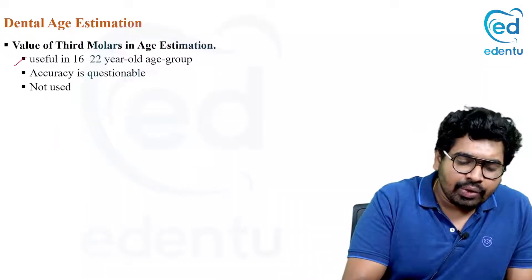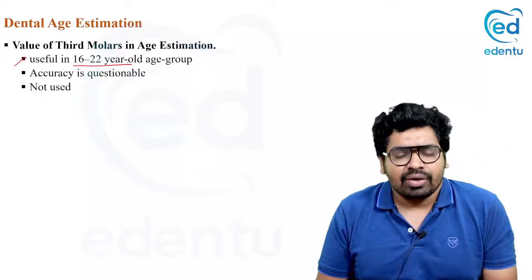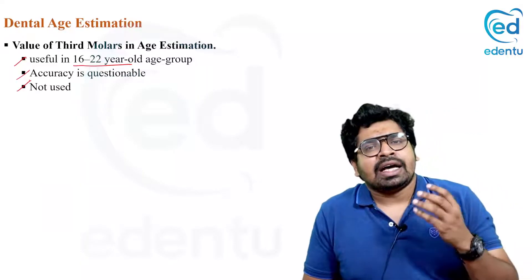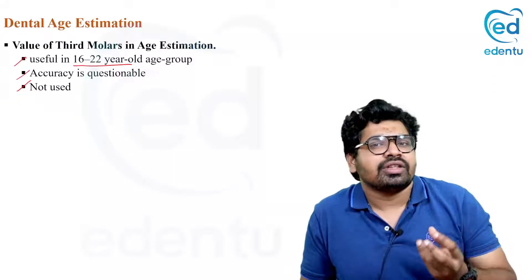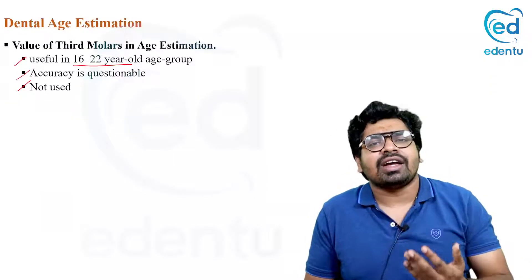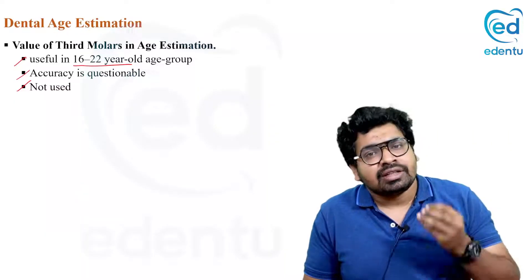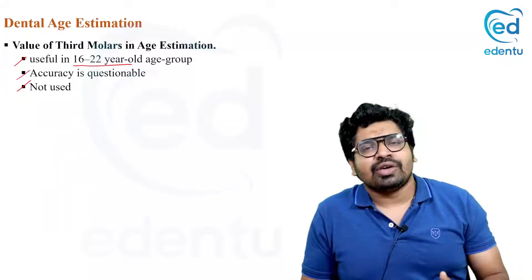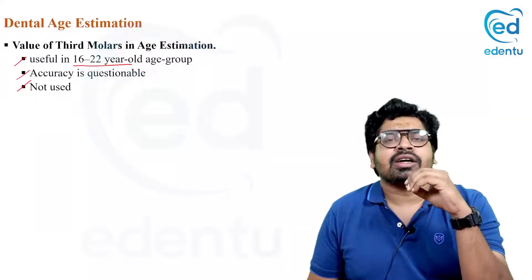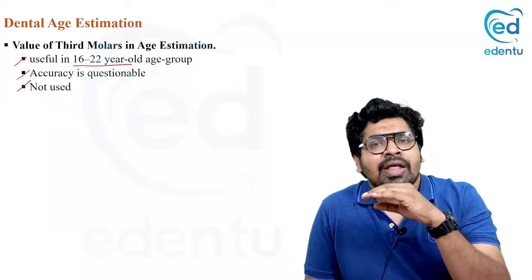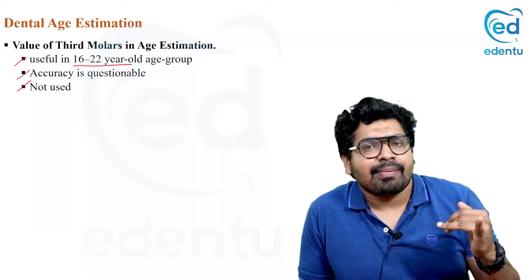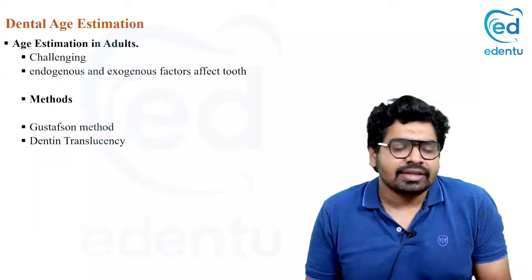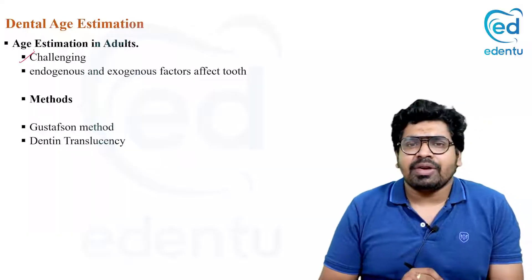The third molar estimation method is mainly used for the 16 to 22 year old age group, but it is not commonly used because eruption timing is highly variable between individuals — in some persons the third molar erupts very fast, in others it is impacted and does not erupt at all. Therefore it is not a reliable estimation method. The best two methods for children and adolescents are the Schour and Massler method and the Demirjian method.